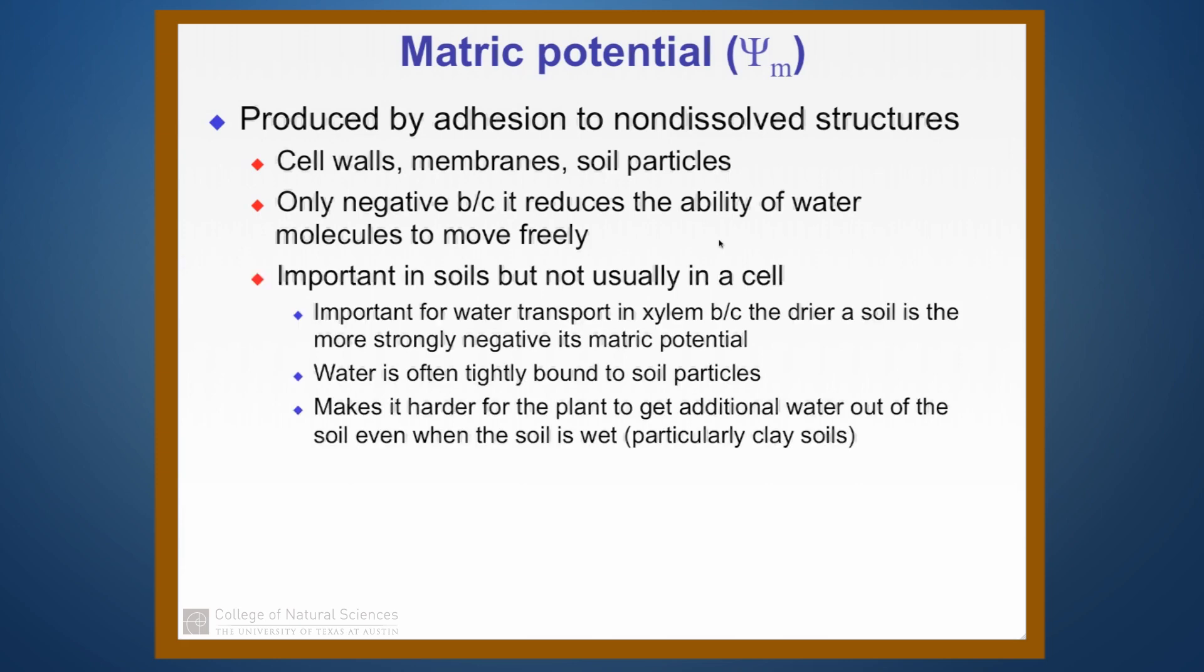Matric potentials can be pretty important in soils, not usually inside of a cell, but they can be very important in soils. And the drier that a soil gets, the more negative the matric potential is in the soil. And so water that's very close to the surface of the soil is tightly bound by hydrogen bonding. And this in turn makes it harder for the plant to get water out of the soil as it's drying. And the drier the soil gets, the harder it is for the plant to get additional water.